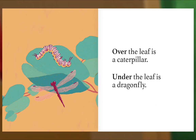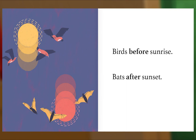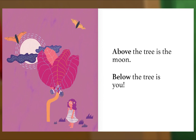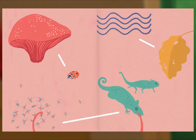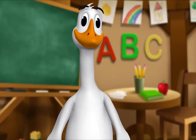Quick as a squirrel. Slow as a snail. Birds before sunrise. Bats after sunset. Above the tree is the moon. Below the tree is you. The End. Thank you, Mr. Goose! Thank you for reading with me.